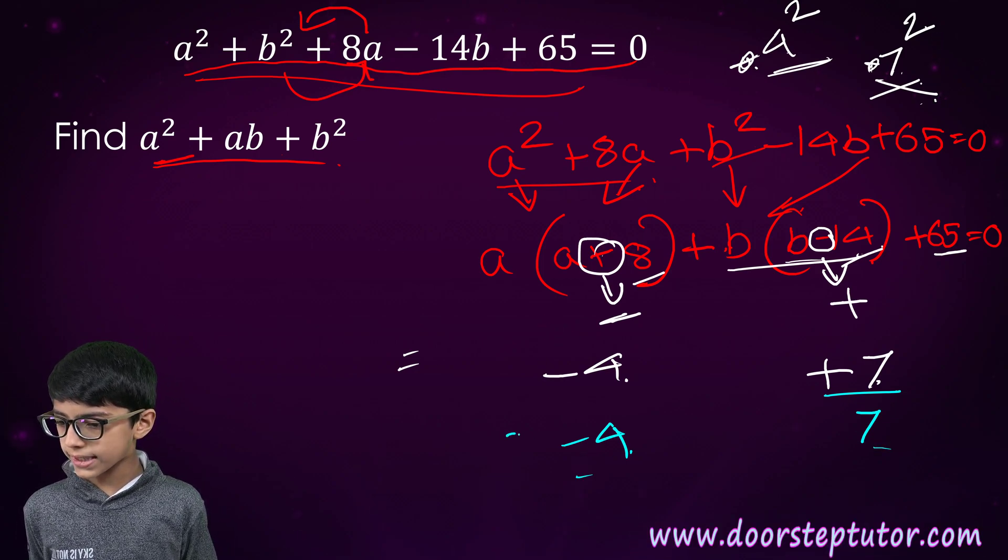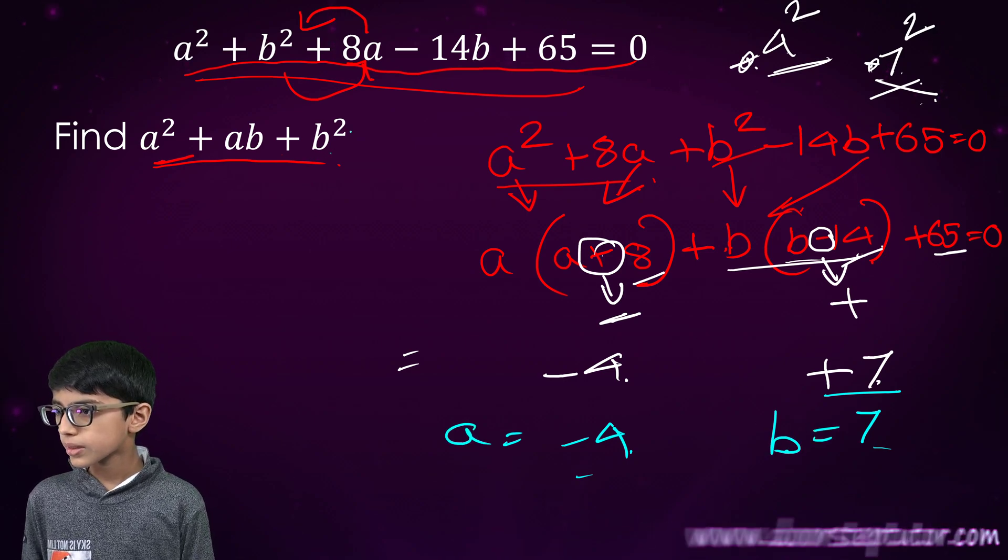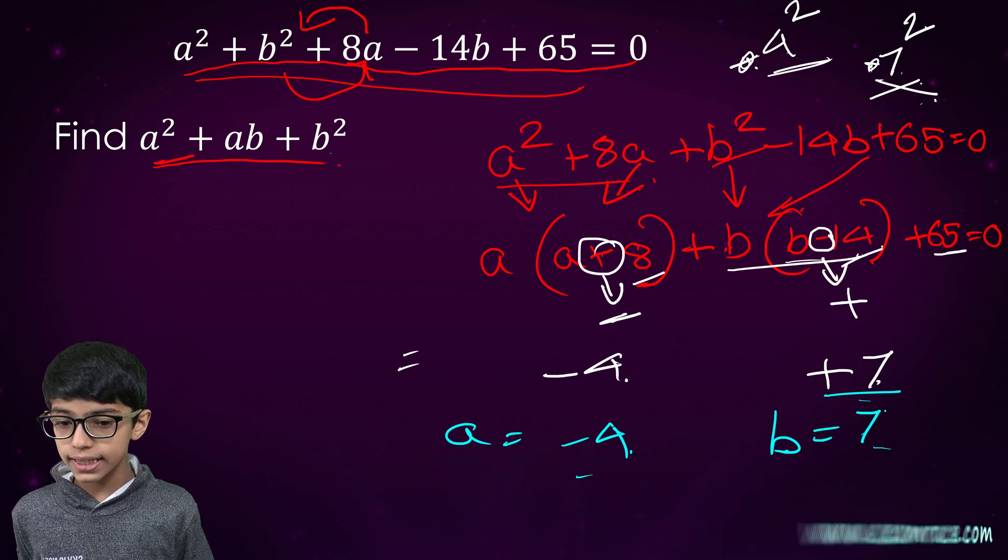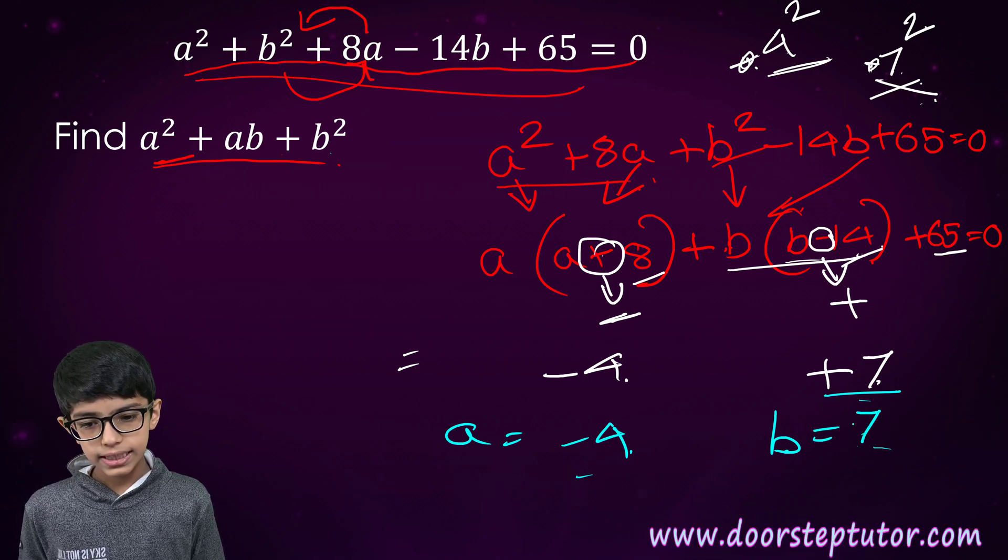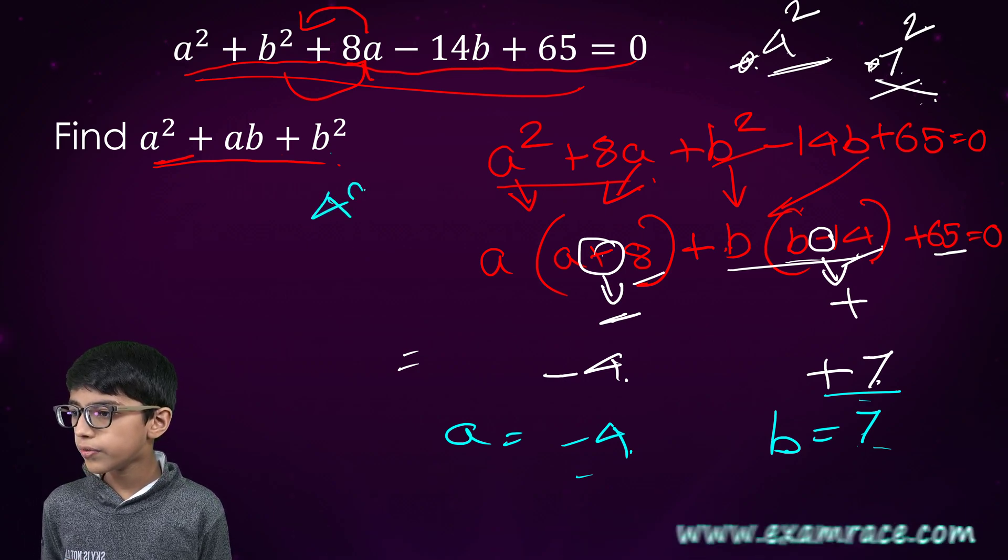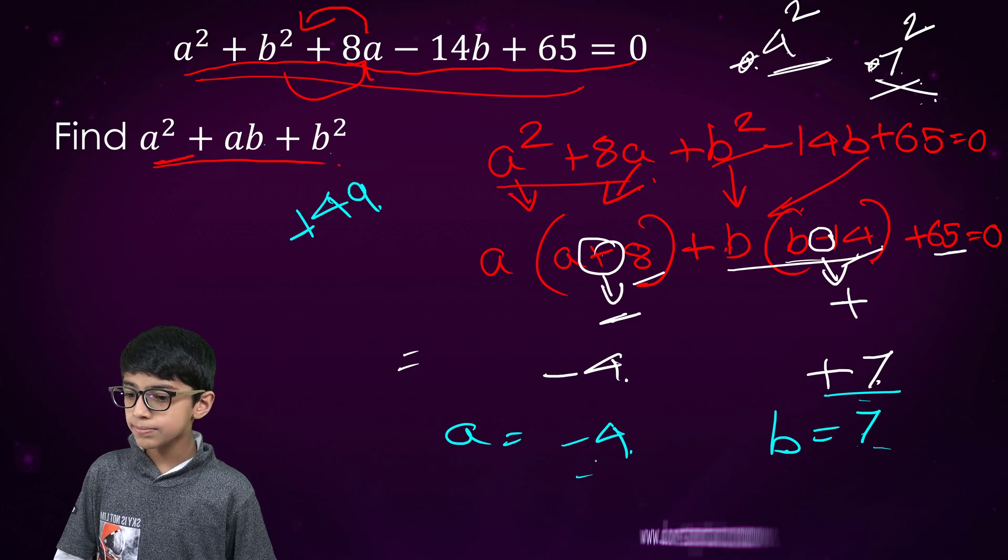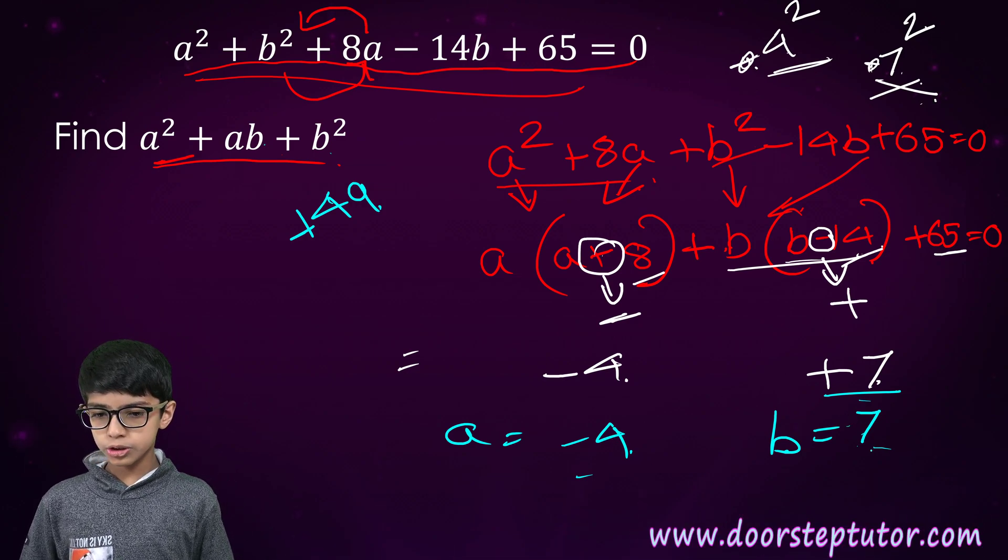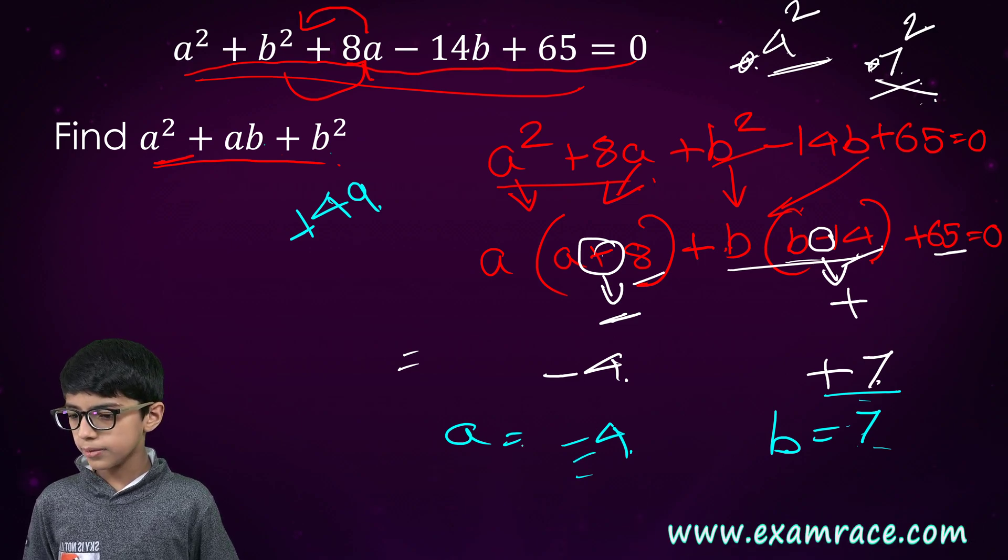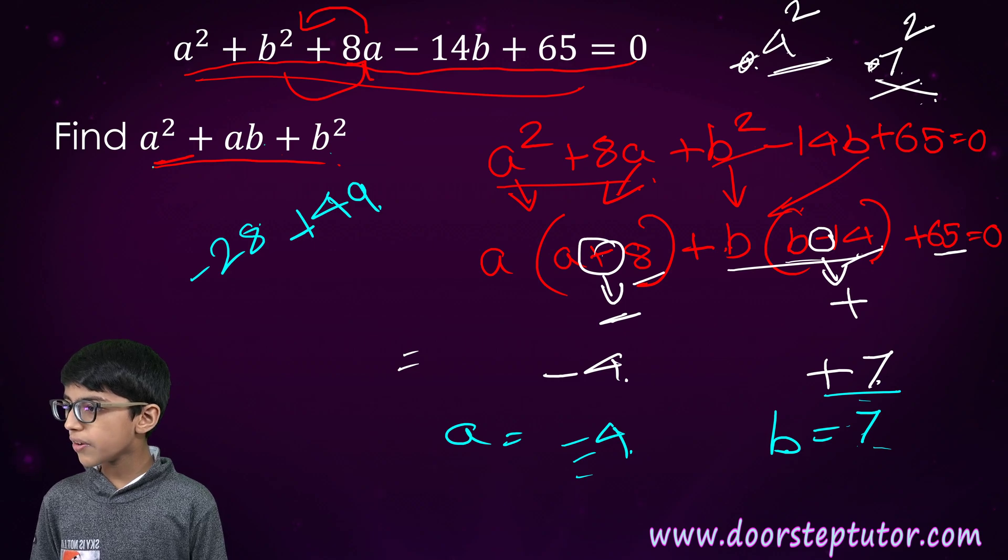Now we will substitute the values. a is -4 and b is 7. b² that is 7², 7 × 7. What will we get? Yes, 7 sevens are 49. Then we will add ab that is -4 × 7. 4 × 7 is 28 and we will put the minus sign, -28. Then we will add...